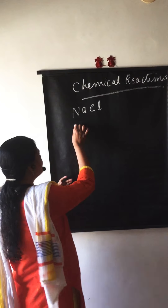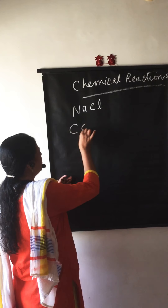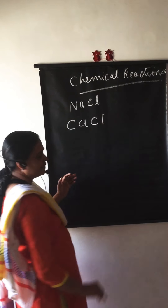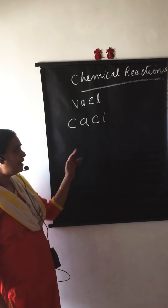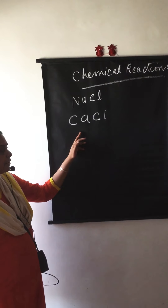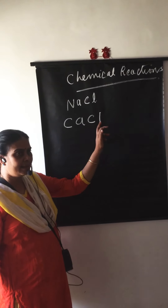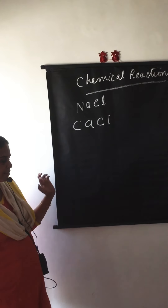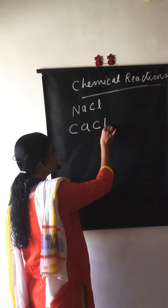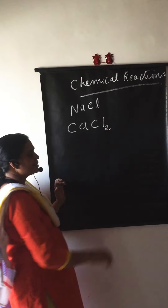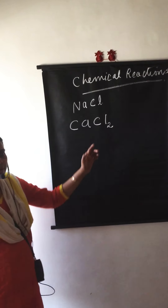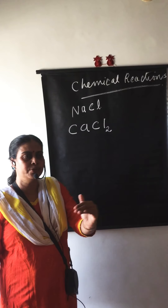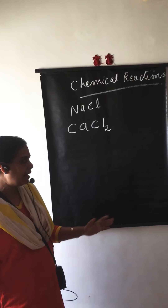Take another example: calcium chloride. Calcium is Ca, chlorine is Cl. The valency of the first element is written under the second and the second under the first. The valency of calcium is 2, so it is written under chlorine. Chlorine's valency is 1 — if it is 1, no need to write anything. So the formula is CaCl2.